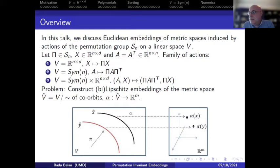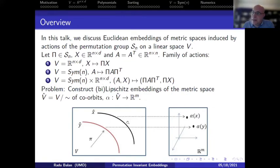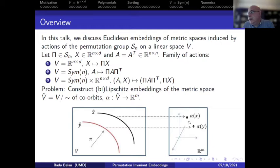The problem is to find and construct, if possible, a bi-Lipschitz embedding of the quotient space into Euclidean space ℝ^m. We want to find the dimension m as well as the explicit embedding. Pictorially: we have the space V, for each element X we have its equivalence class — the orbit under permutation π — and the collection of orbits defines a quotient space. The embedding maps each equivalence class to one m-dimensional vector, and being bi-Lipschitz means the natural distance between orbits is equivalent to the Euclidean distance between their images.